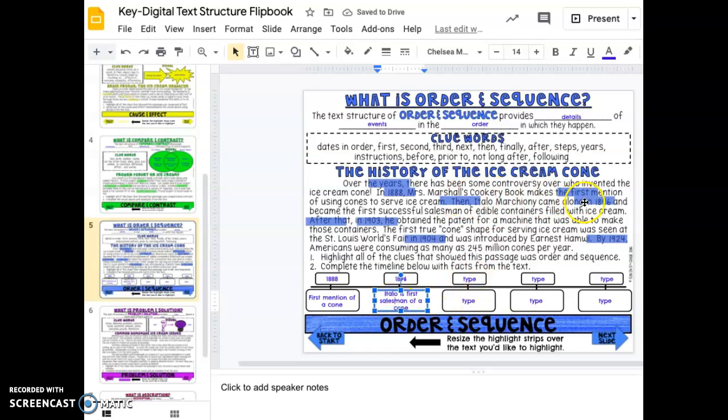The next one that happened was 1903, and in that he got the patent for the machine to make cones. The next date is 1904, and in 1904 was the first use of a cone shape.